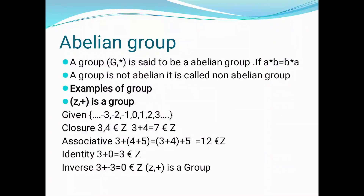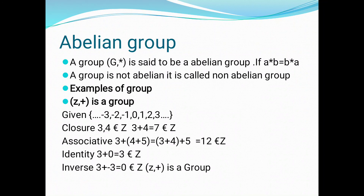The first condition is closure. Closure means we take two elements a and b contained in the set, and using the binary operation addition, we get a value that is also contained in the set. For example, we take a = 3 and b = 4. Three plus four equals seven, and seven is contained in the set Z. This property is satisfied.